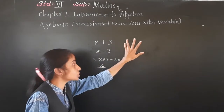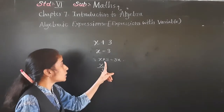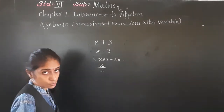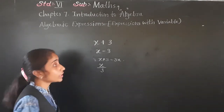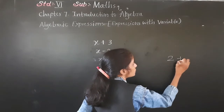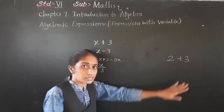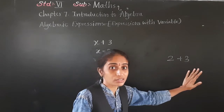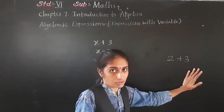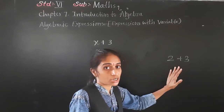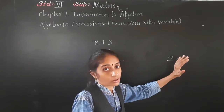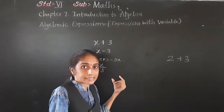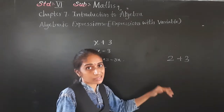x plus 3 is also an expression, x minus 3 is also an expression, x multiplied by 3 is also an expression, x upon 3 is also an algebraic expression. Now, suppose if I have 2 plus 3 — is it an algebraic expression? No. An algebraic expression is a combination of variable and constant with basic mathematical operations, including both a letter and a number.